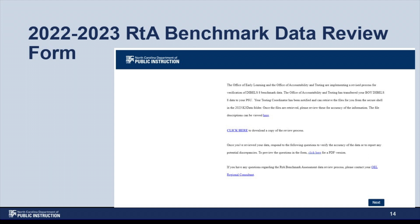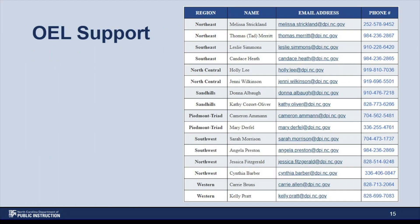Now that you have completed your review, go to the Live 22-23 RTA Benchmark Data Review Form using the link provided in the RTA Benchmark Data Review Process document that you received in the notification email, and enter your responses. If you have identified potential discrepancies in the data, your OEL Regional Consultant will be contacting you to assist you in resolving these. If you have any questions about this process, please contact your OEL Regional Consultant for support.